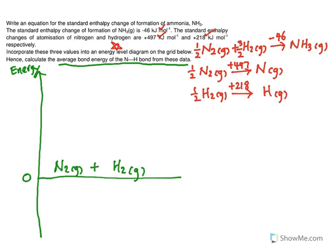And then, because over here, the main equation, there is a half N2. So, we put a half N2, and we put a 3/2 H2 gas. And then, we go down 46 to get your NH3 gas. This is -46.